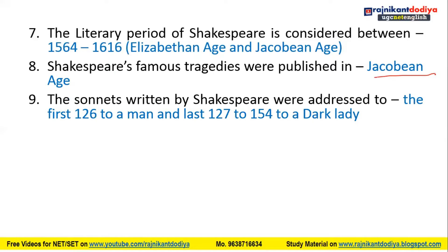The sonnets written by Shakespeare were addressed as follows: sonnets 1 to 126 to a man, sonnets 127 to 152 to a dark lady, and the remaining sonnets 153 and 154 were addressed to someone else — Cupid, the god of love.